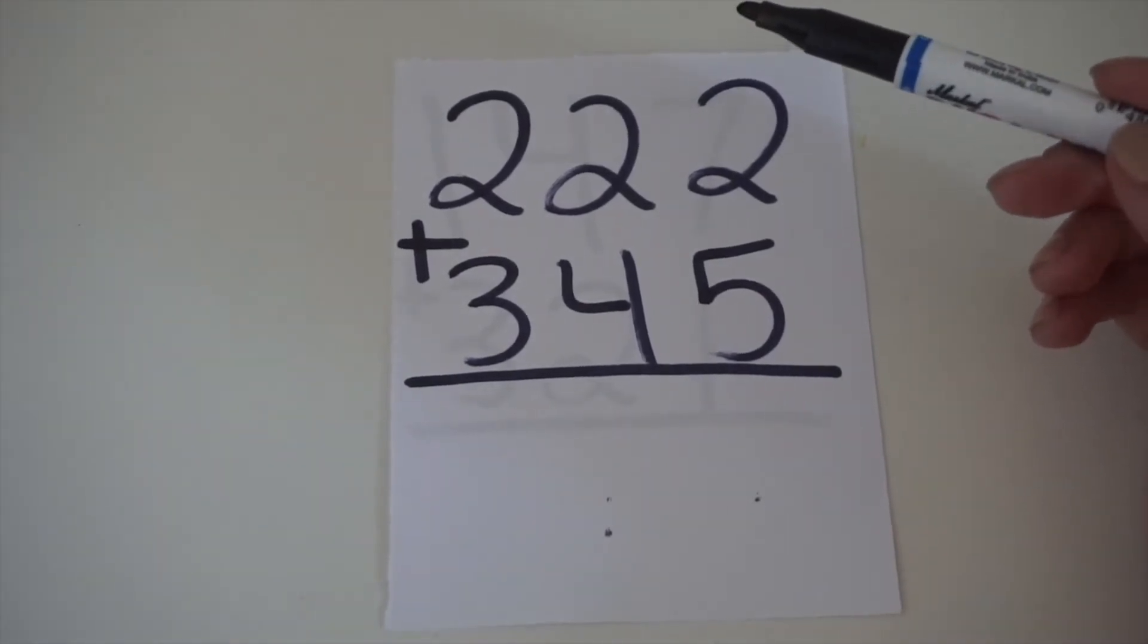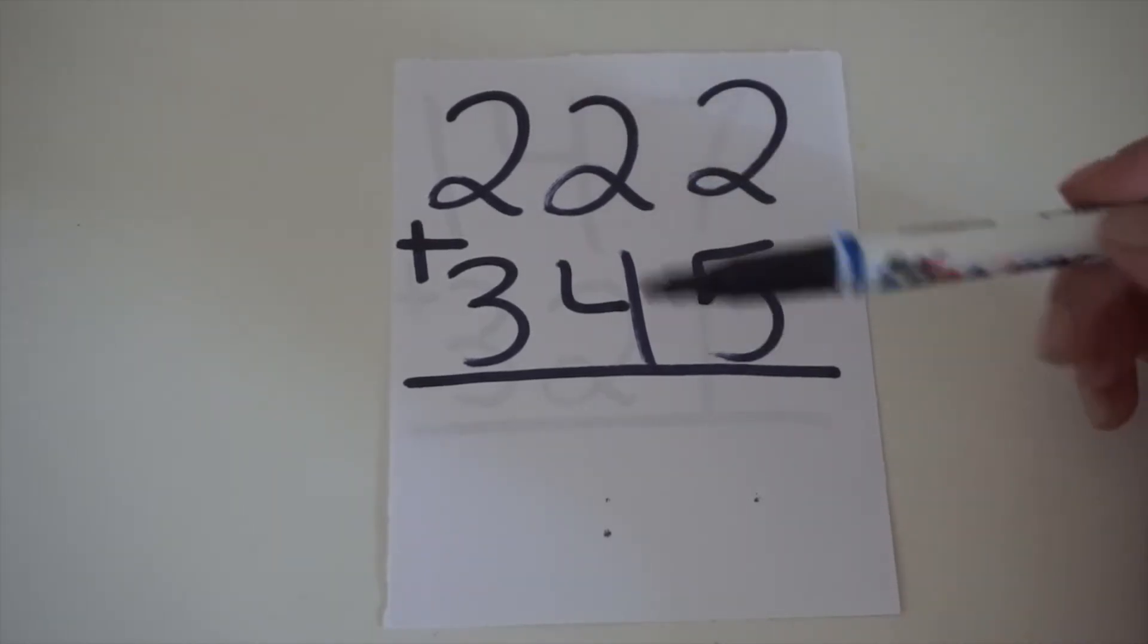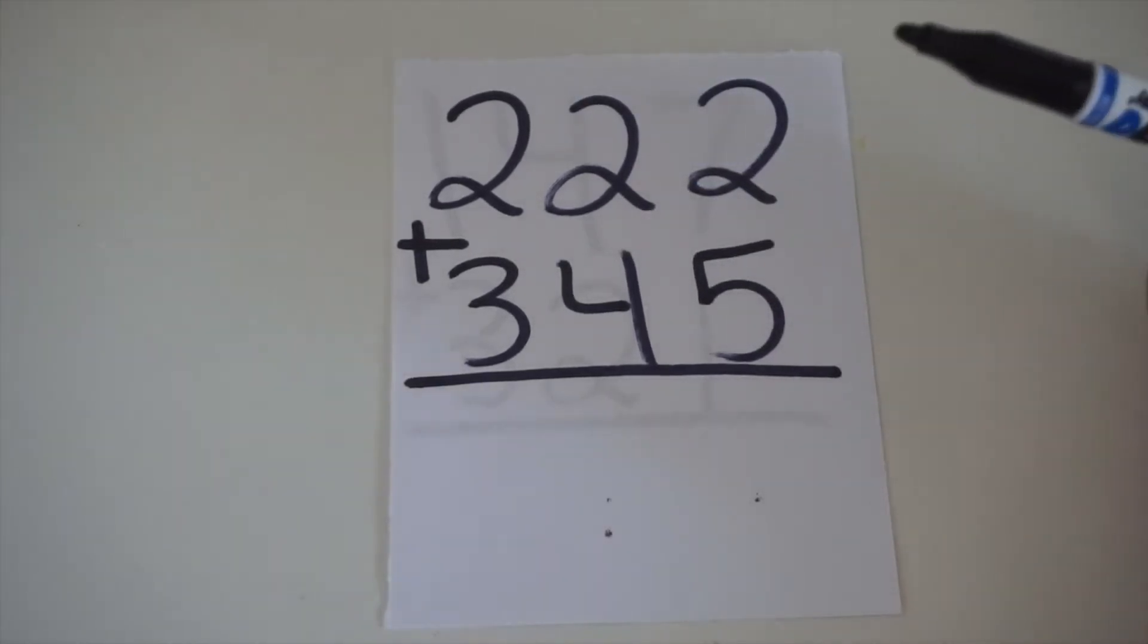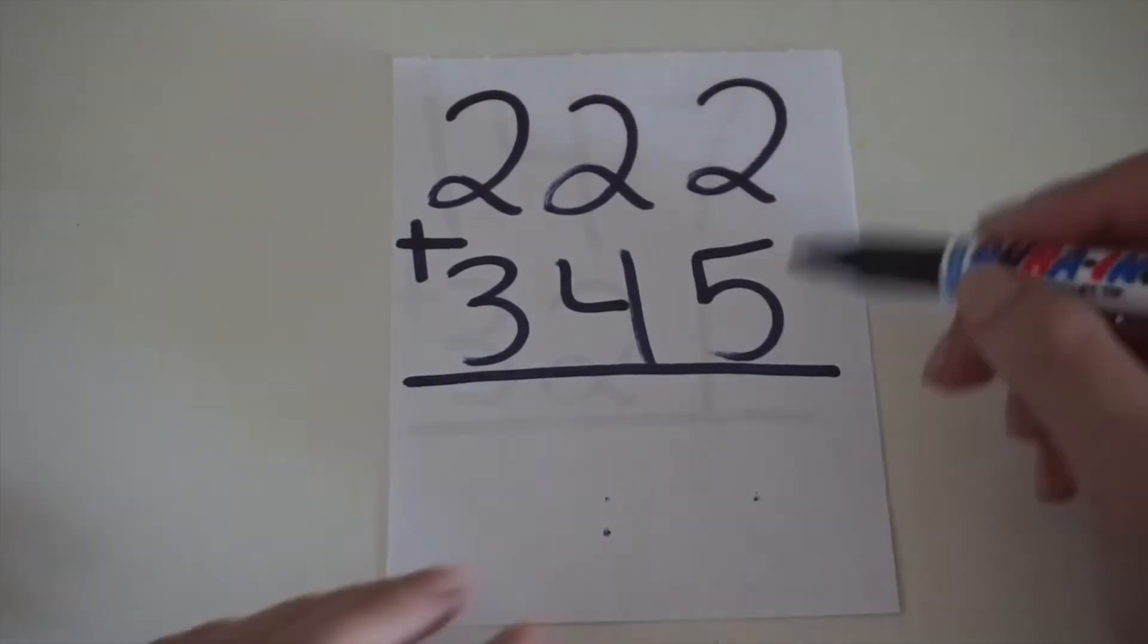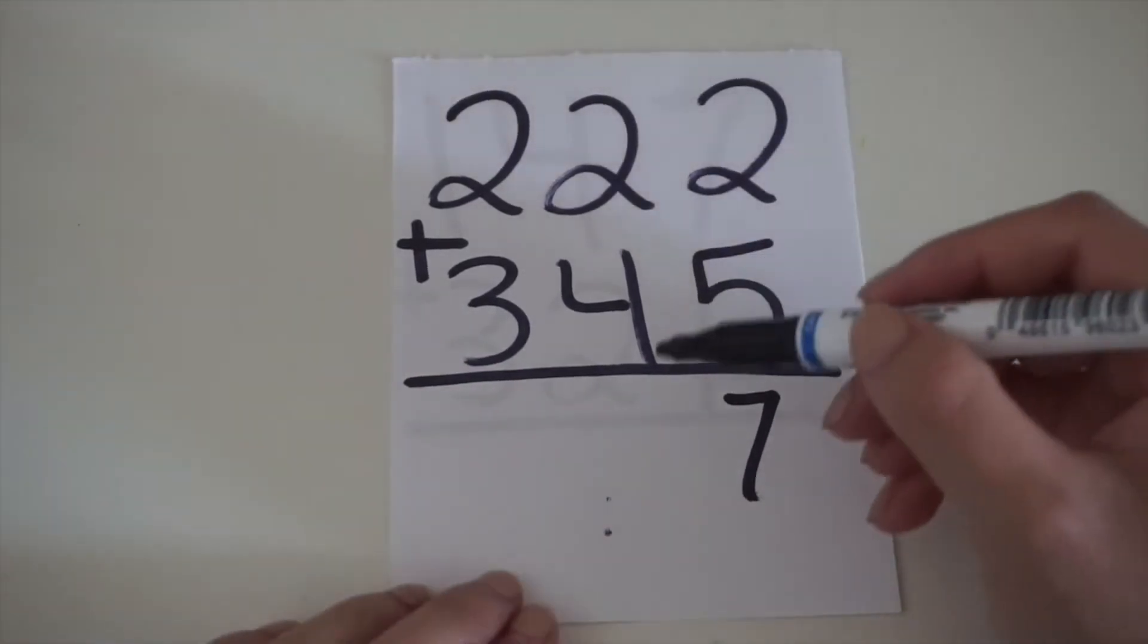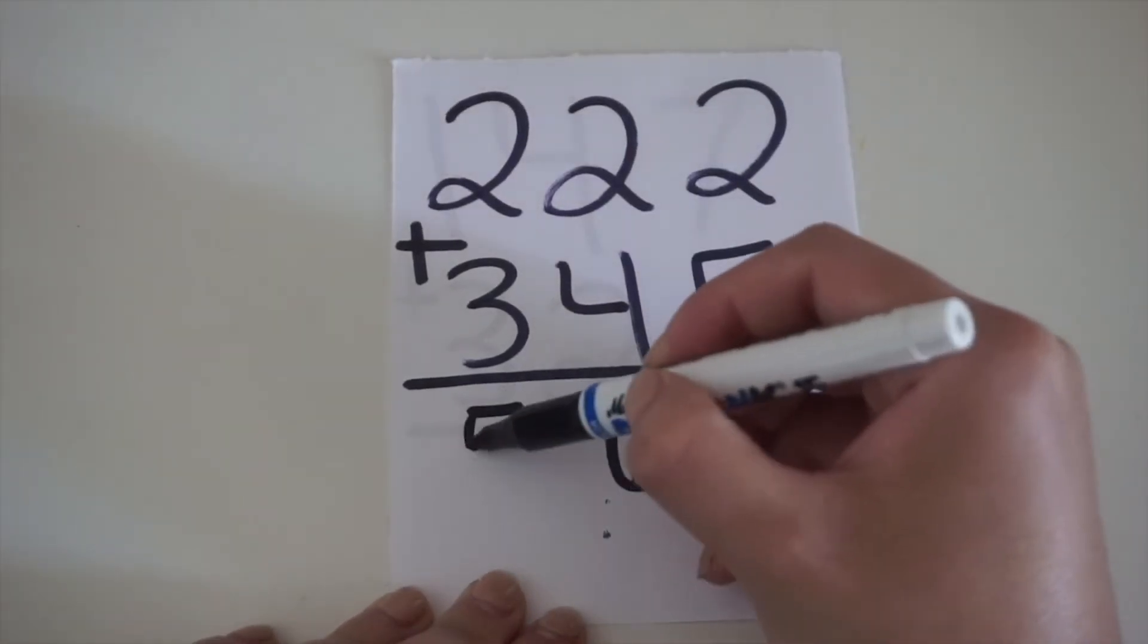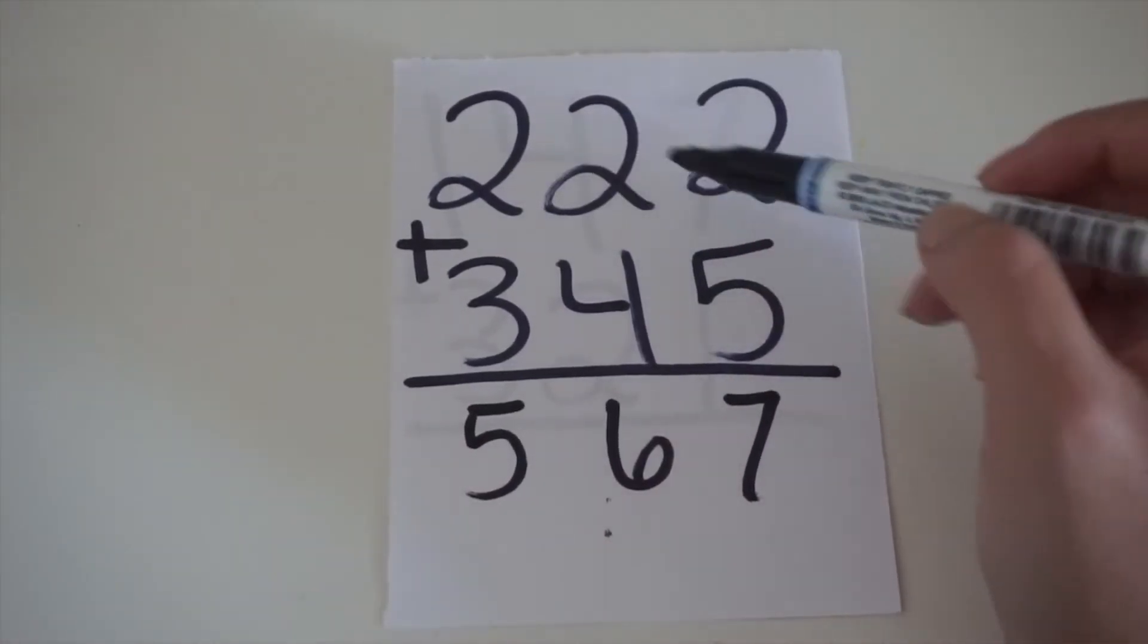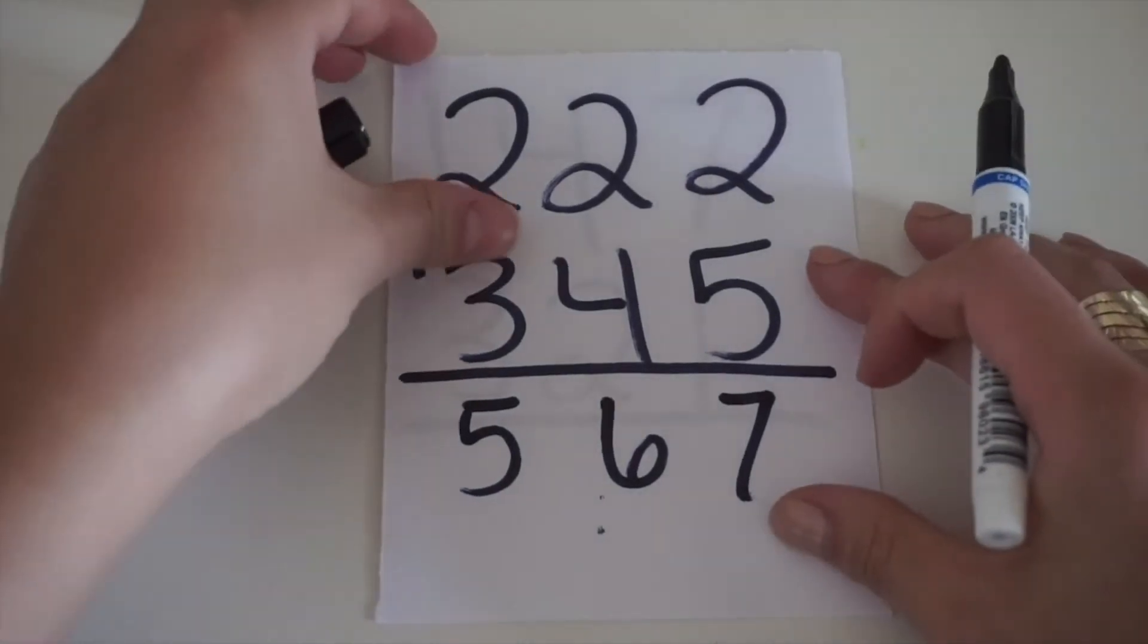We have 222 plus 345. Again, 2 plus 5 equals 7, 4 plus 2 equals 6, and 2 plus 3 equals 5. So, 222 plus 347 equals 567.